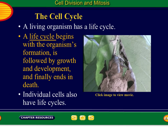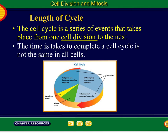Individual cells also have life cycles, so an organism has a life cycle and a cell has a life cycle. There's a picture of a cocoon — the life cycle of a butterfly starts as a caterpillar, cocoon, and butterfly. So we're going to be talking about the life cycle of a cell, which we call the cell cycle. For letter B, the cell cycle is a series of events that takes place from one cell division to the next. Put 'cell division' in that blank and highlight 'the cell cycle.'